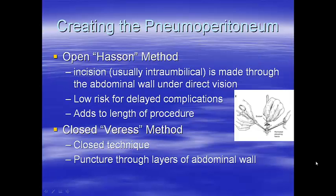Creation of the pneumoperitoneum can be achieved by two methods. The open-Hassan method involves an incision, usually infraumbilical, which is made through the abdominal wall under direct vision. This is low risk for delayed complications such as bowel injury, but adds to the total length of the procedure.